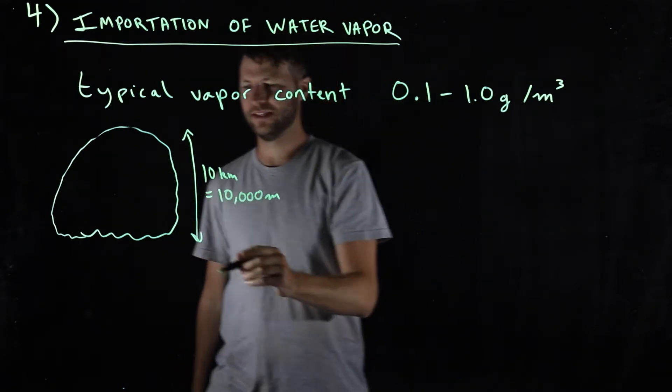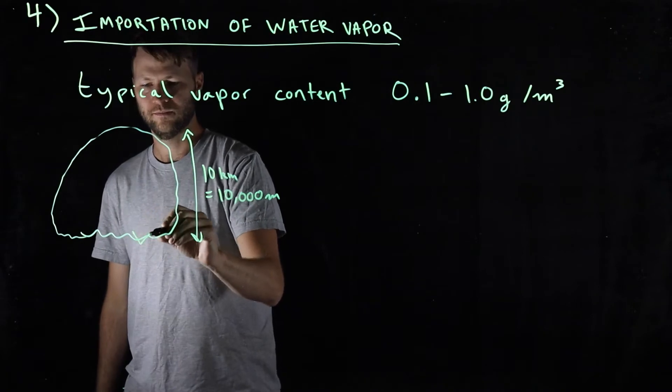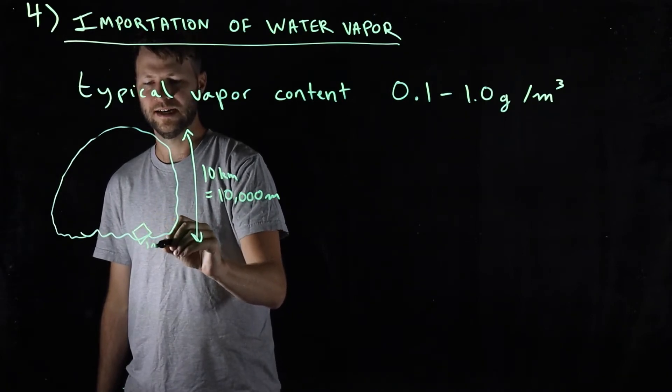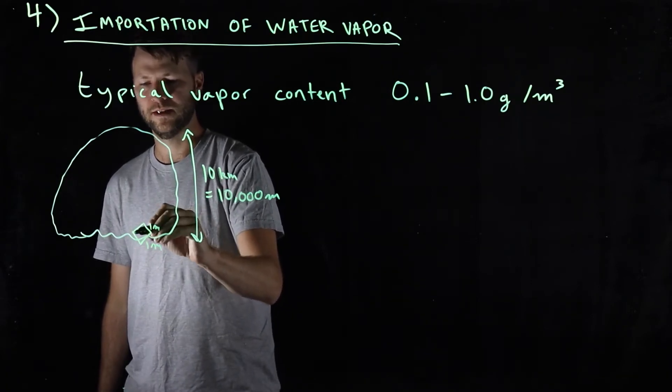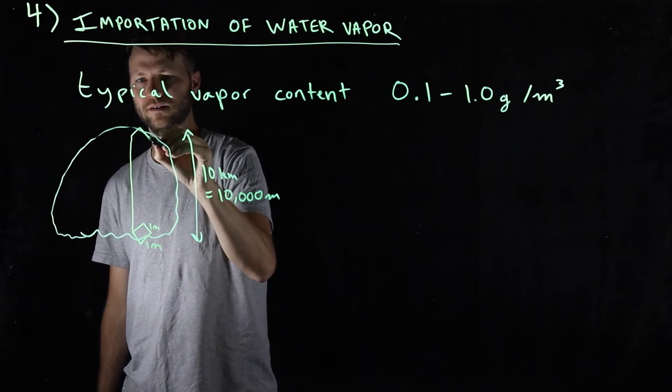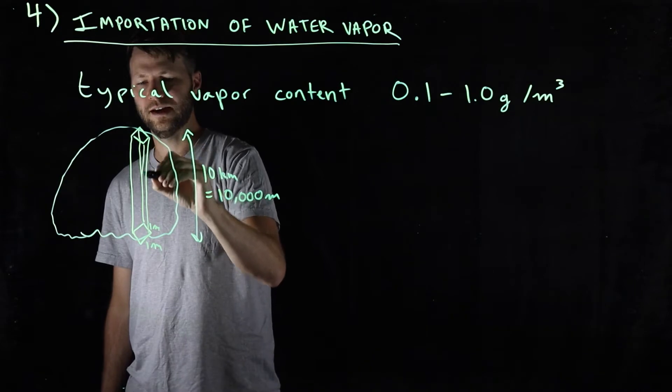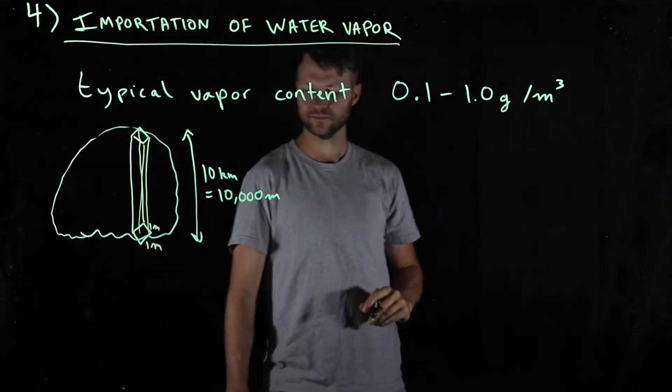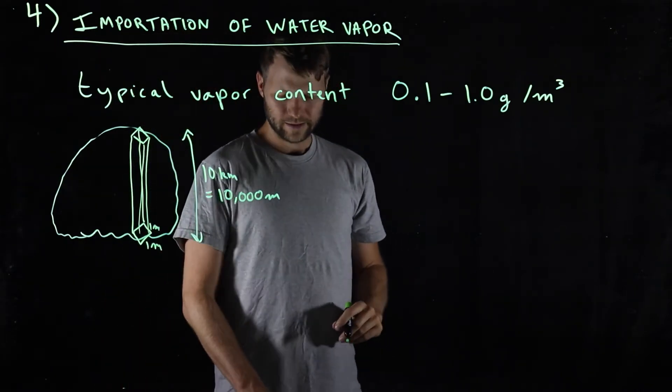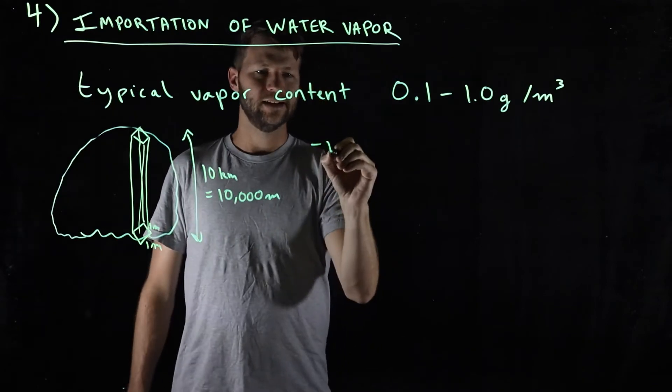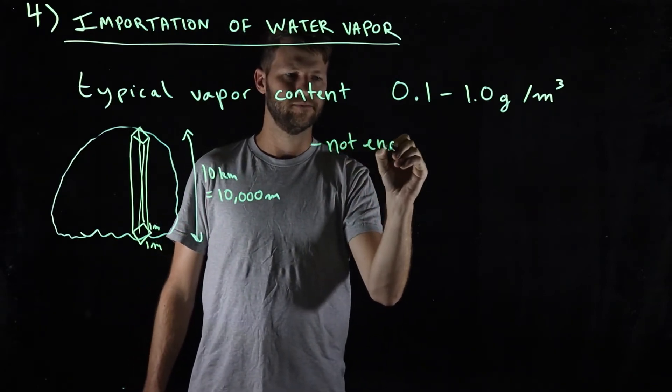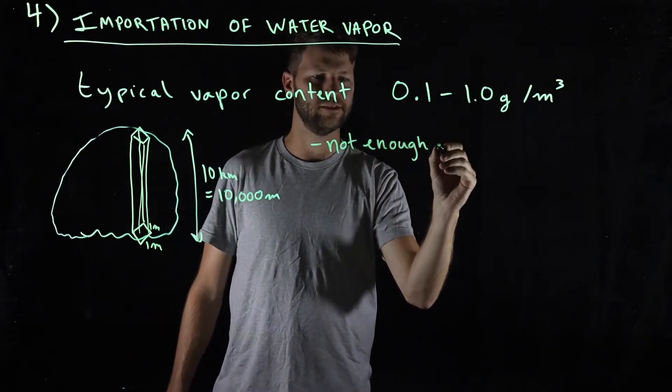And let's consider a column of this that's 1 meter on a side, and just think about how much water could there possibly be in this column of air. And the answer is that it's not enough to actually sustain heavy precipitation.